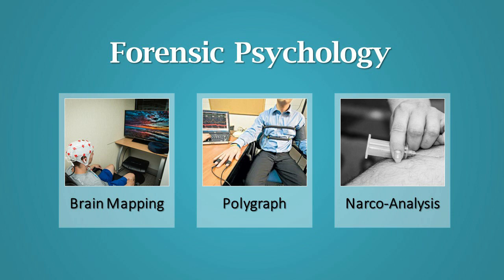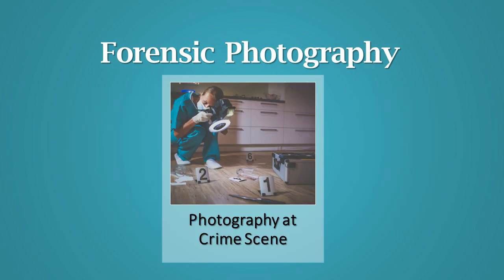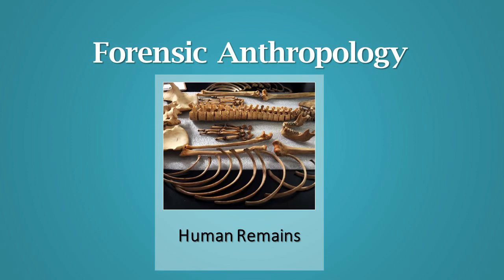Forensic Psychology: this division performs tests like polygraph, narcoanalysis, brain mapping, etc. Forensic Photography: this division provides assistance in photography of the crime scene and can provide an opinion on questioned photo prints. Forensic Anthropology: this division deals with the examination of skeletal remains such as long bones, pelvic region, or skull to get information related to stature, sex, race, or age.